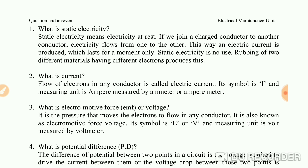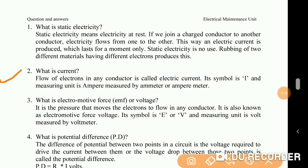What is current? Flow of electrons in any conductor is called electric current. Its symbol is I and the measuring unit is ampere, measured by an ammeter or ampere meter.